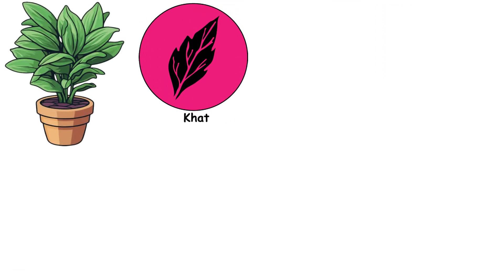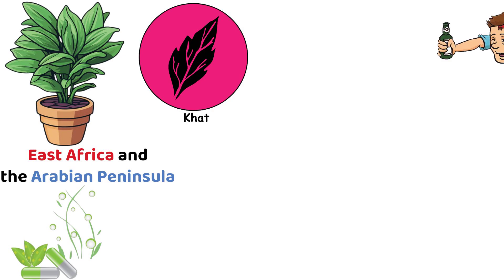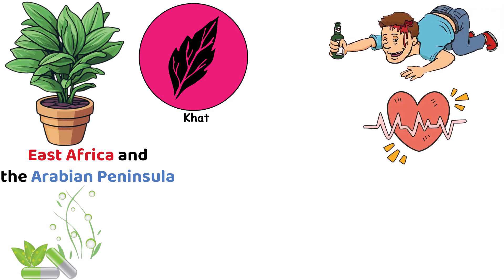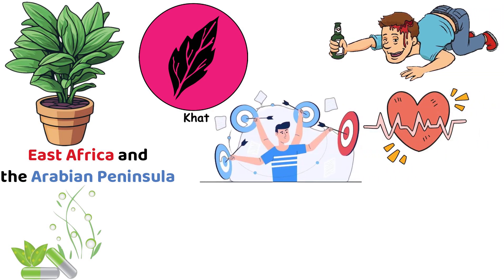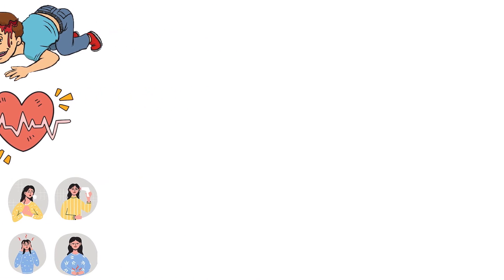Khat is a plant native to East Africa and the Arabian Peninsula whose leaves contain stimulant compounds. Chewing khat can produce feelings of euphoria, increased energy, and improved focus, but it can also lead to dependence and health problems with long-term use.